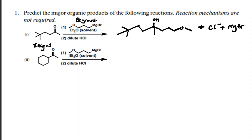For number two, what is the predicted product? This is a ketone as well, and this is a Grignard reagent.